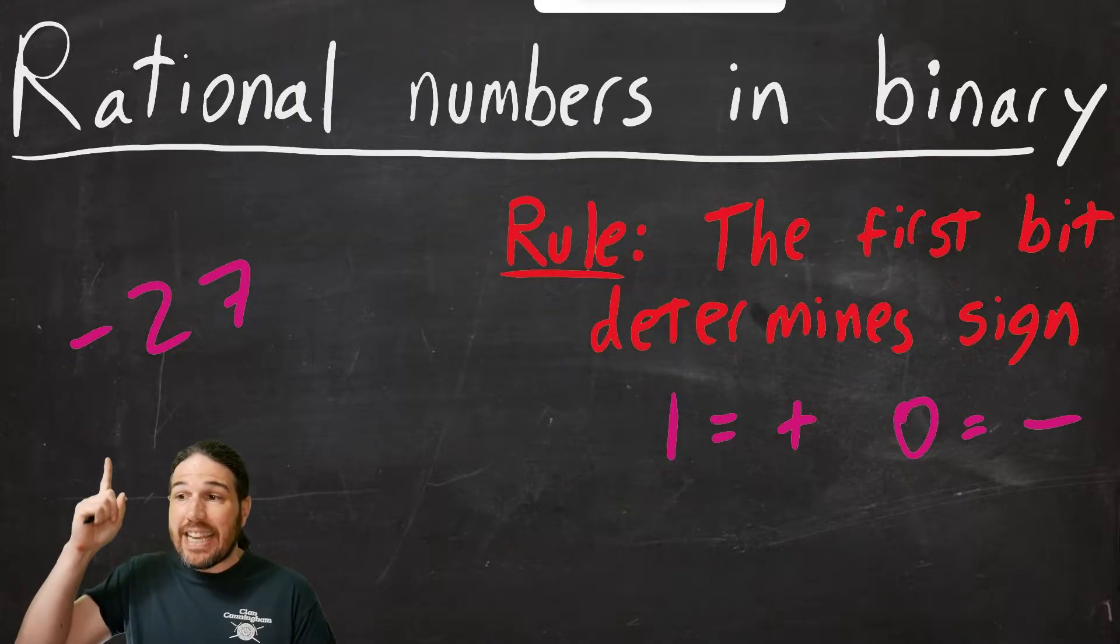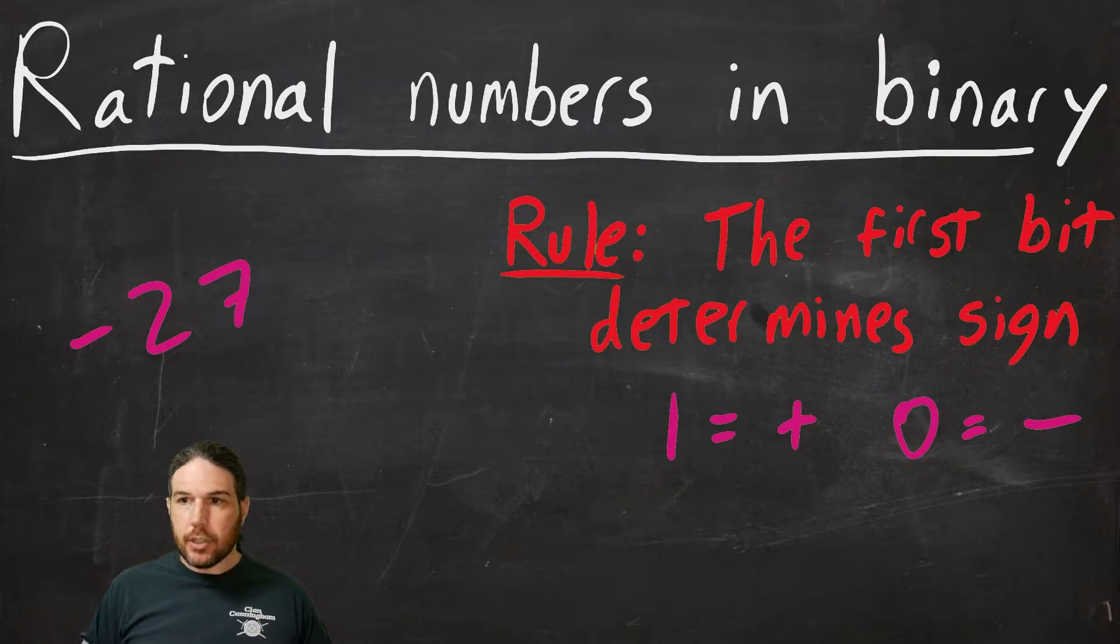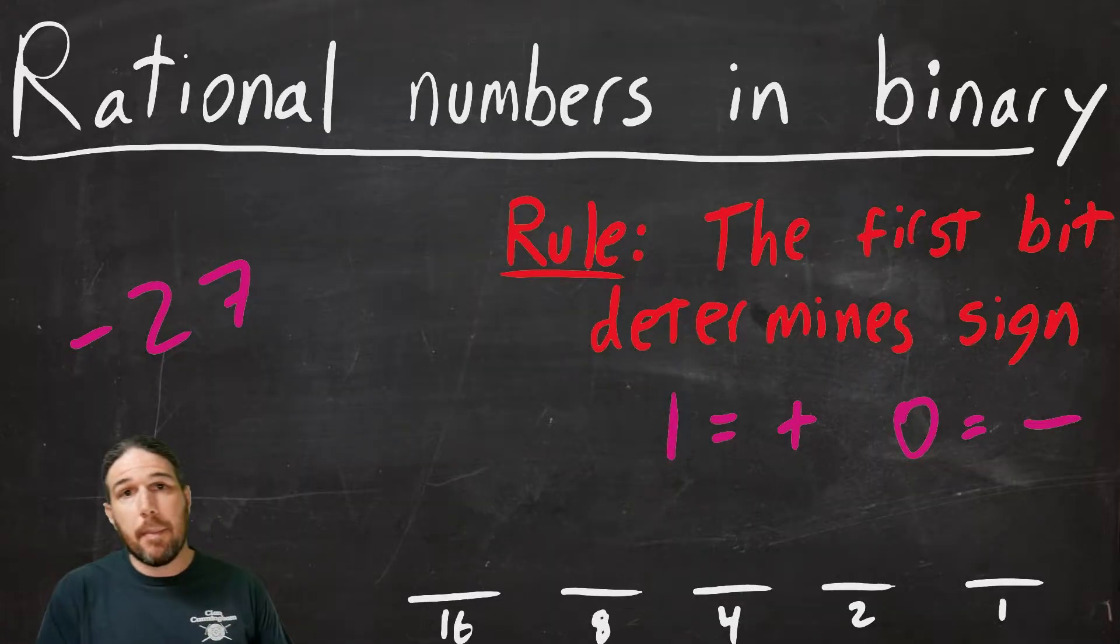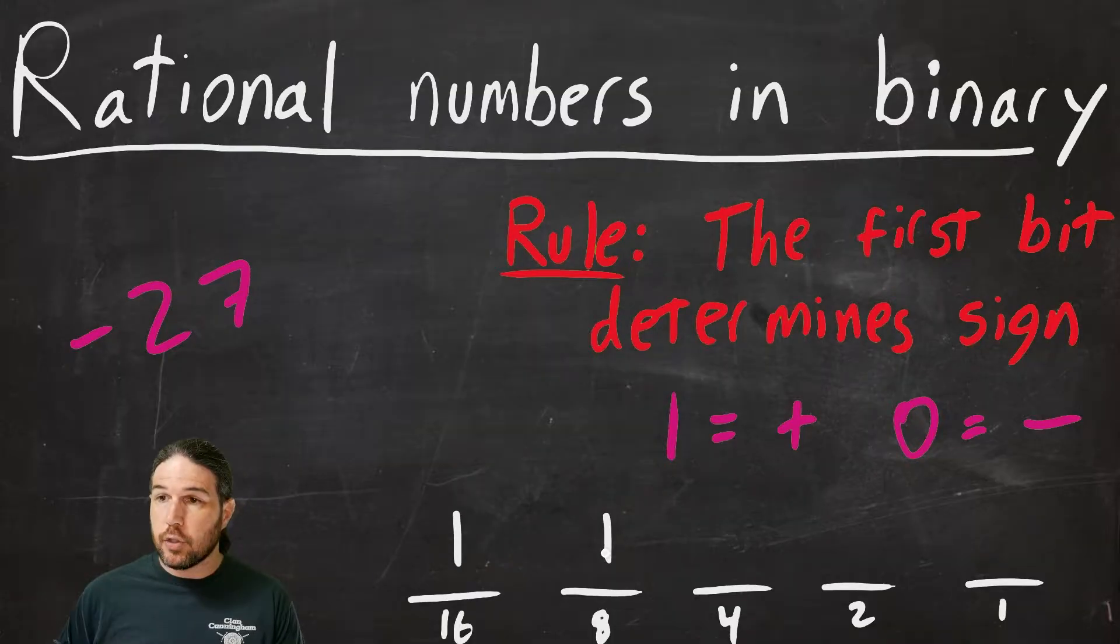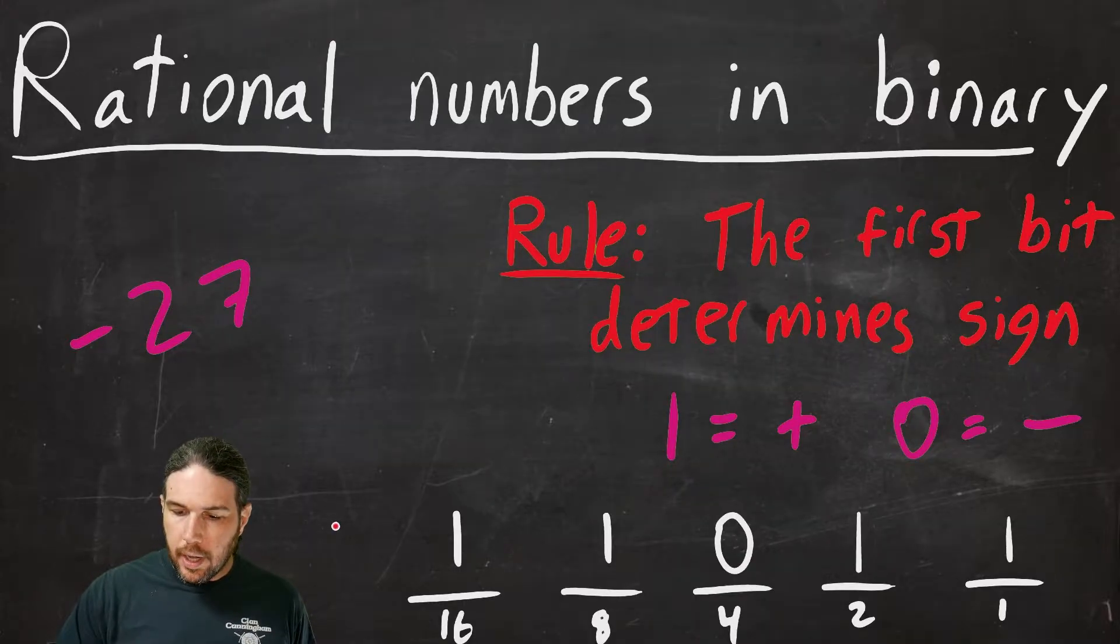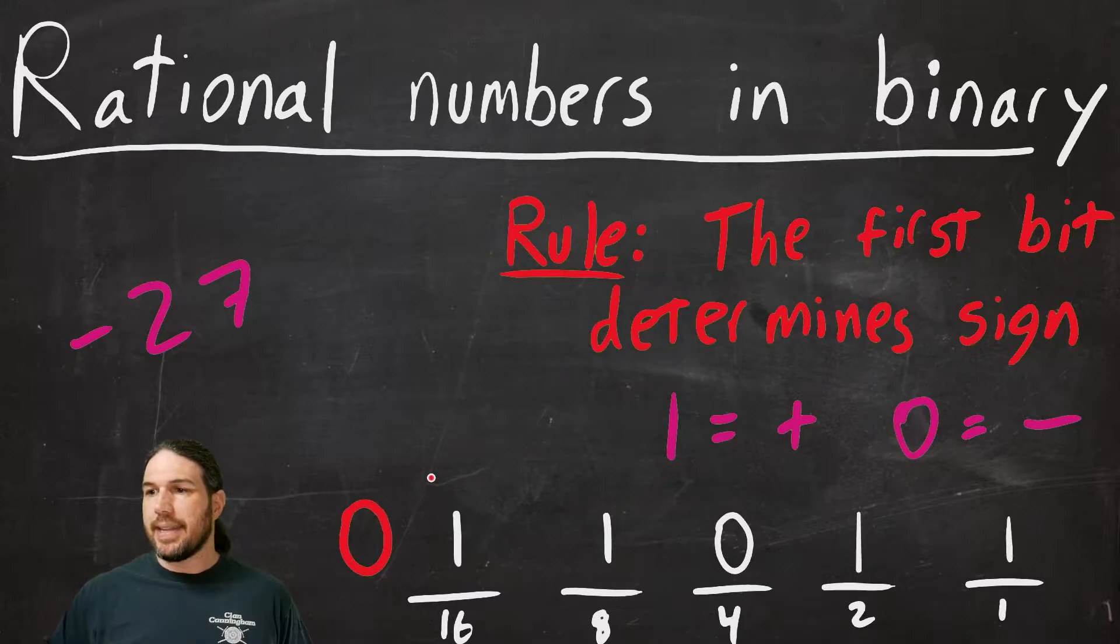So in order to make negative 27, the first thing we got to do is just make 27. I've got my place values set up. I just need to figure out how to make 27. Let's see. 16 plus 8 is 24. Another 4 would get us to 28, so that's too many. 24, 25, 26, and 27. So 1, 1, 0, 1, 1 is 27. To make it negative, we would put another bit in the front that is a zero in order to denote that that is actually negative 27.